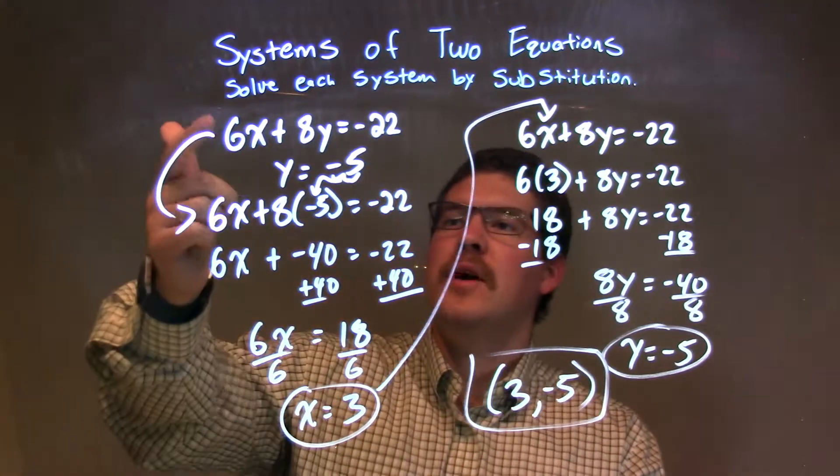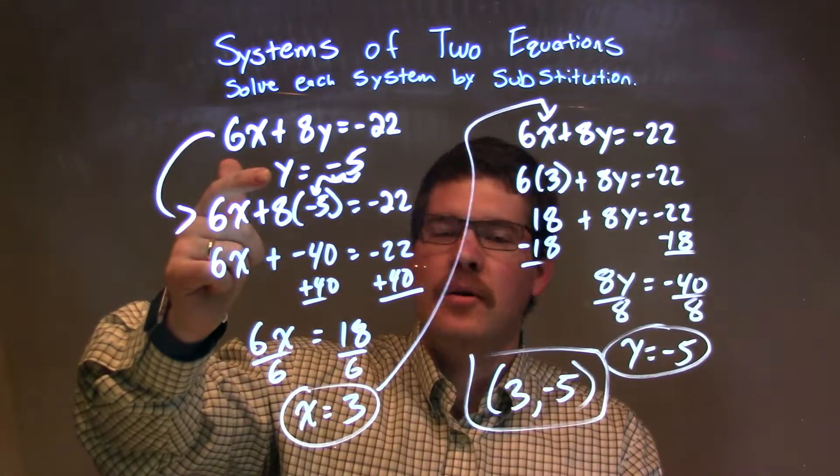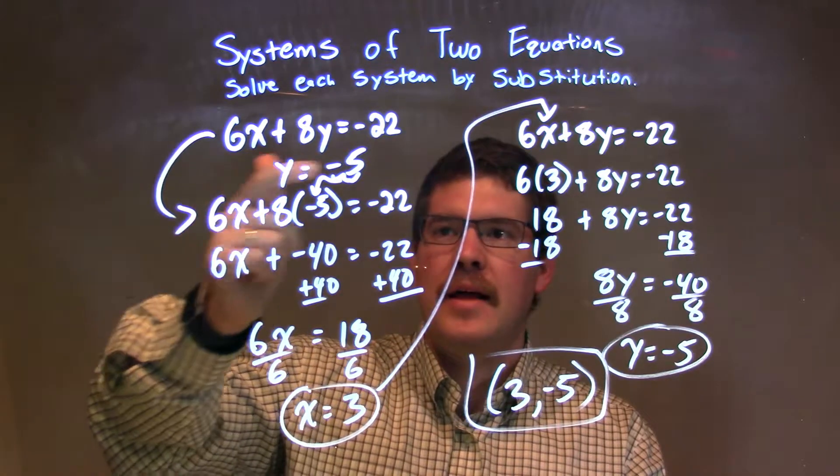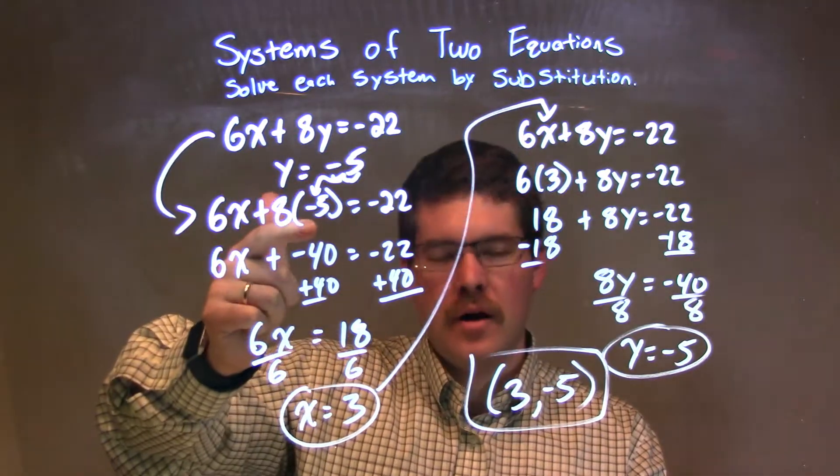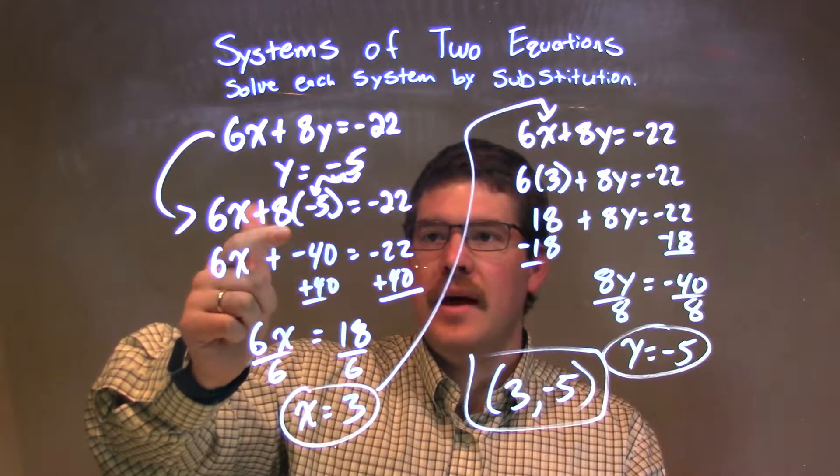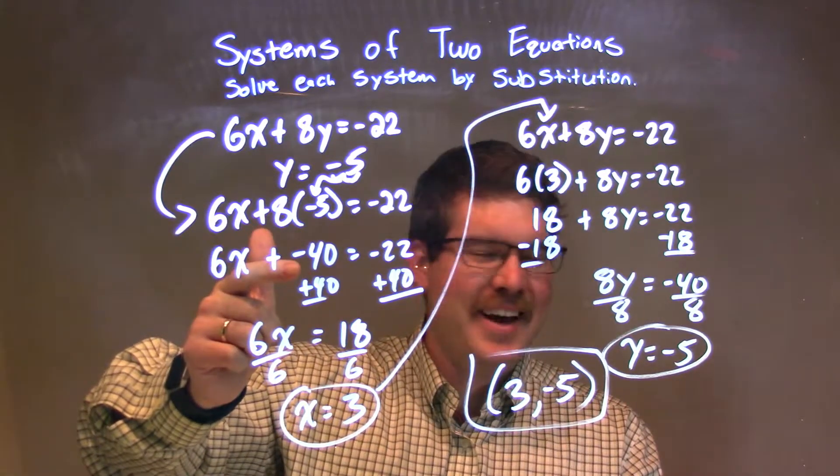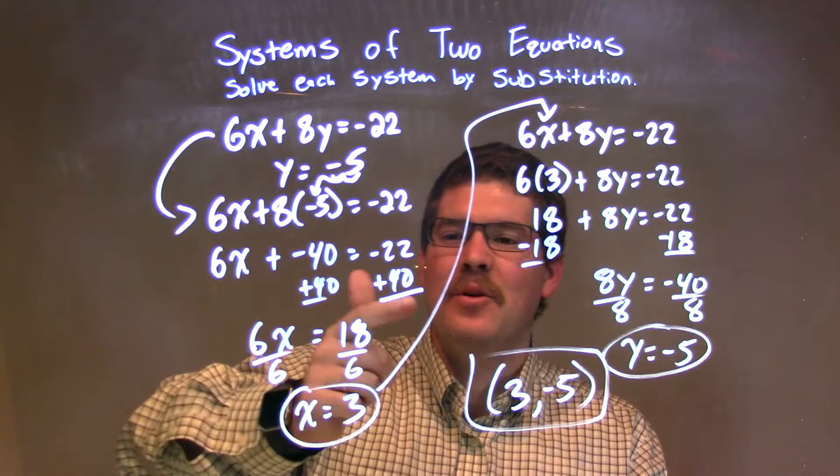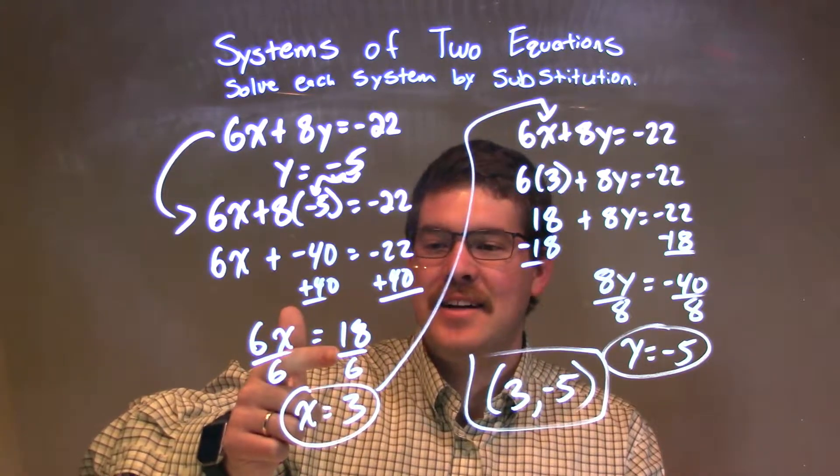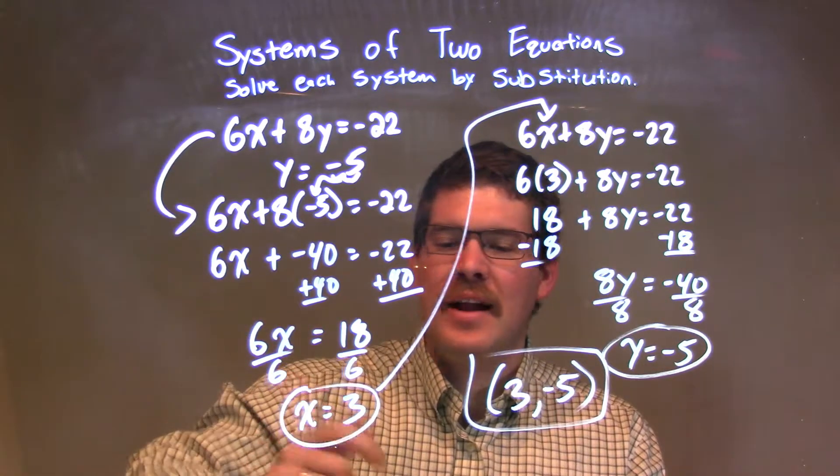So let's recap. We're given our two equations here, and we notice that our second one, y, was already isolated. I plug that negative 5 into the y of the first equation and I simplify. 8 times negative 5 equals negative 40. I added 40 to both sides to get 18 on the right. Divided by 6 on both sides. Got x is equal to 3.